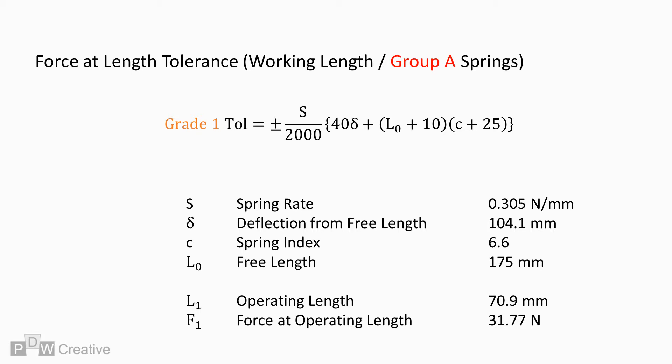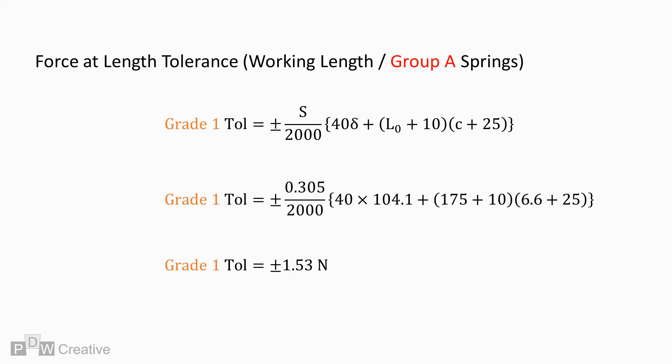We should also know the operating length and force transmitted at length. Based on the input data shown, an operating length of 70.9 mm transmitting a force of 31.77 newtons, the Grade 1 force tolerance at this operating length is plus or minus 1.53 newtons.